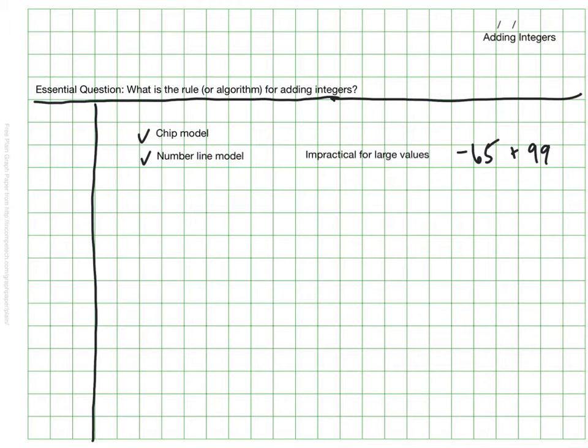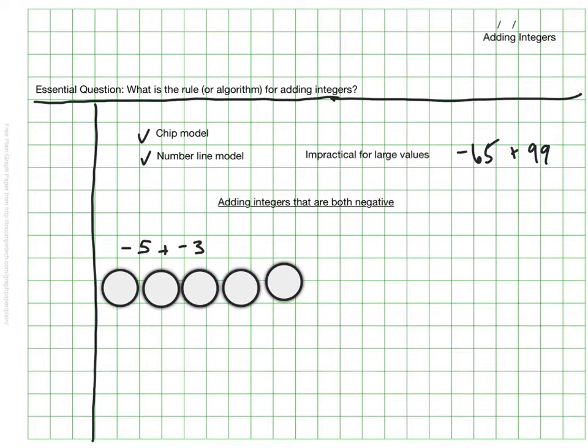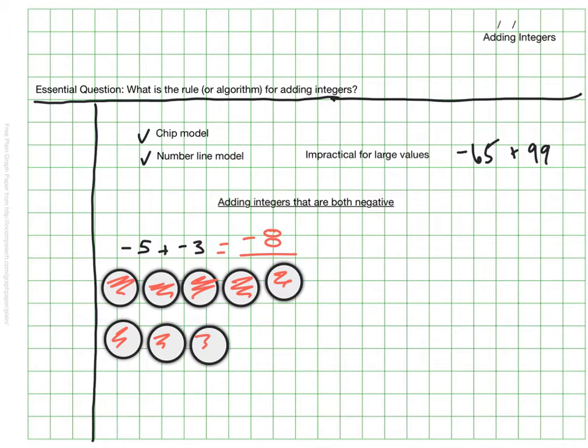And we'll start by looking at examples when both integers are negative. Let's think, for example, if we had negative 5 plus negative 3. And with this, of course, we would say we have negative 5 chips. I'm going to make these red to make them negative. And then we would add three more negative chips. So we'd add our three more and we'd say, oh, we have a total of eight negative chips. Nothing new there.